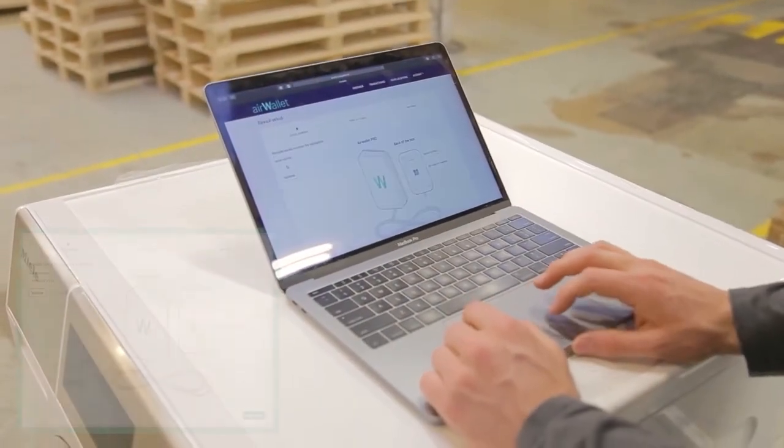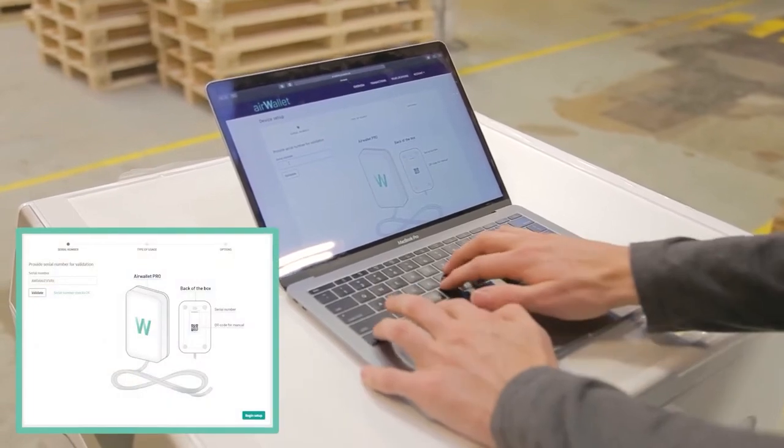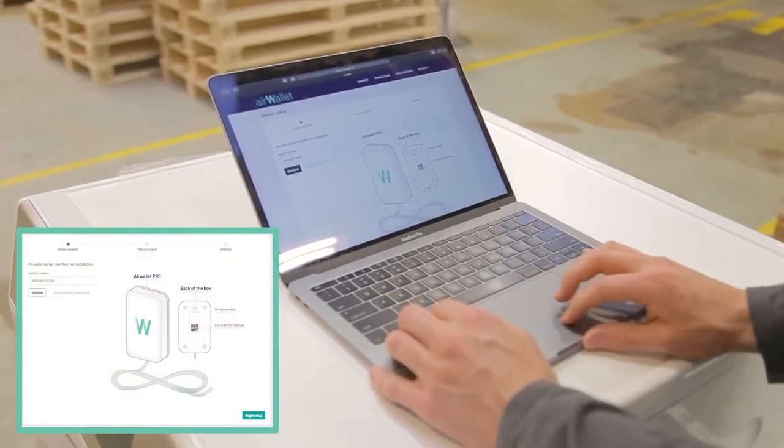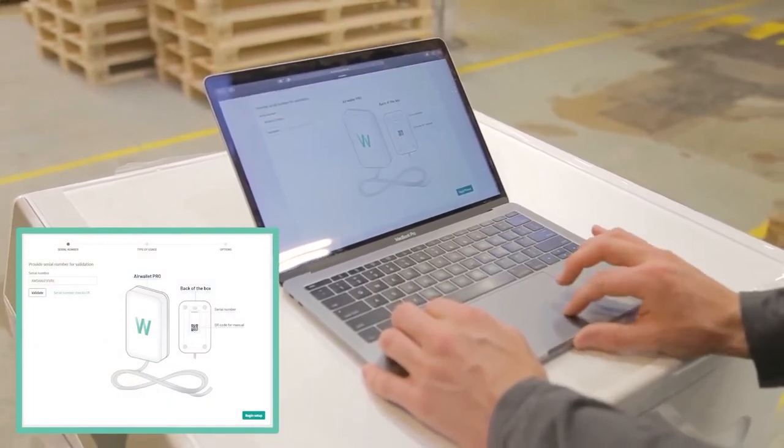Before installing AirWallet, please set up the device on the AirWallet dashboard. Enter the serial number and choose Laundry Professional Solution.